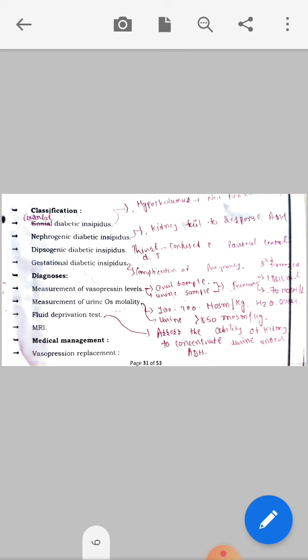Diagnostic evaluation for diabetes insipidus: First of all, there are mainly two common diagnostic evaluations - historical examination and physical examination. Next is measurement of vasopressin level, using both oral sample and urine sample, and both will show increase. Next is measurement of urine osmolarity. Next is fluid deprivation test to assess the ability of kidney to concentrate urine.